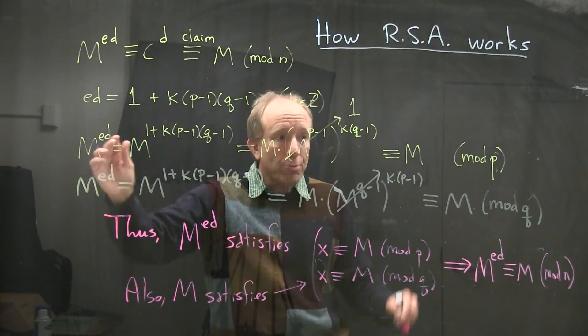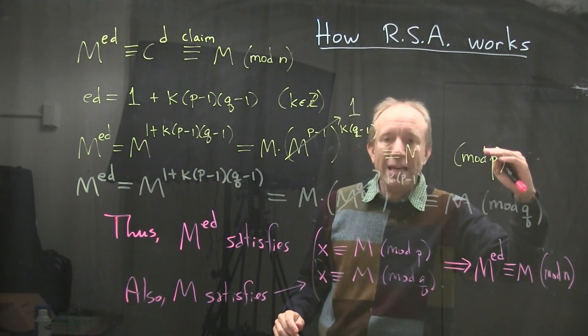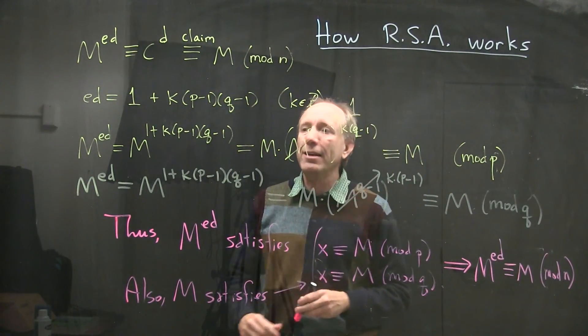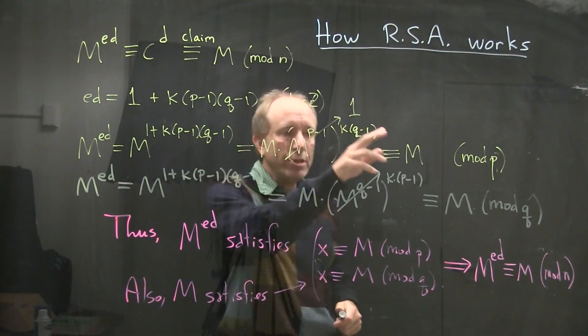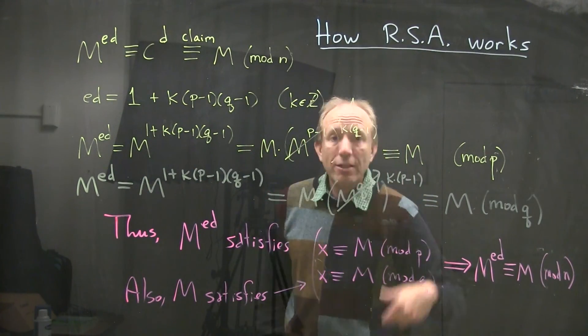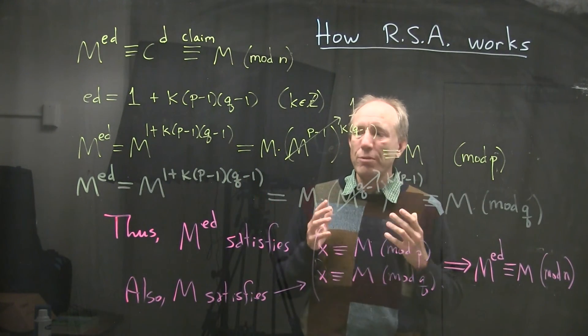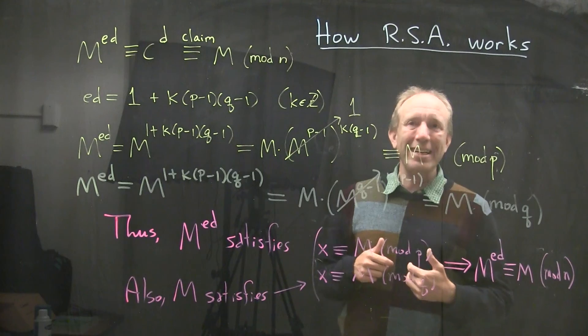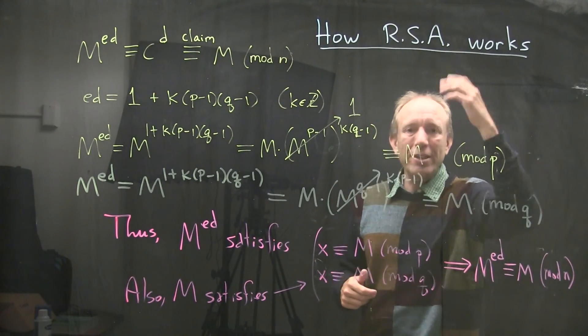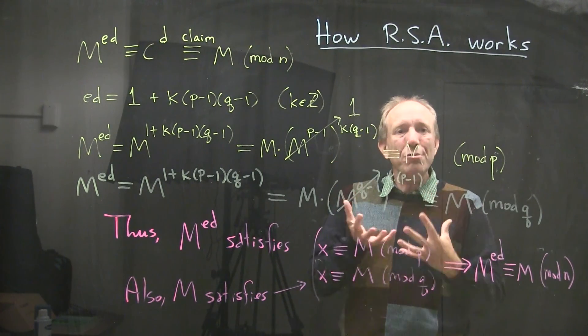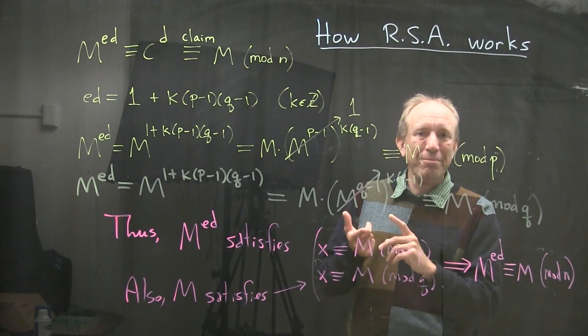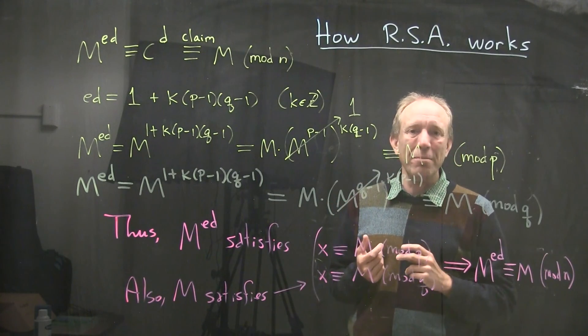However, first we have to calculate in mod P and in mod Q individually, that M to the ED reduces to M. And that uses Fermat's little theorem. It is a wonderful combination of two of the most important theorems in number theory. RSA works because of that joint usage of Fermat's little theorem and the Chinese remainder theorem.